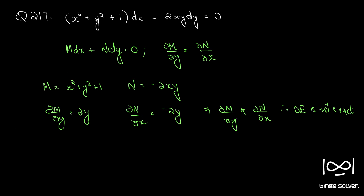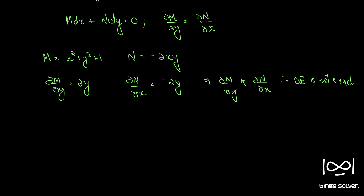When you observe, Rule 1, Rule 2, and Rule 3 do not apply here. We have to find whether Rule 4 or Rule 5 applies. For that, we first find the difference ∂M/∂y minus ∂N/∂x. Here it is 2y minus (−2y) which is 4y. If you divide this difference by N, it converts into a function of x alone.